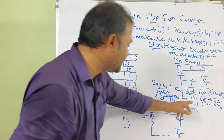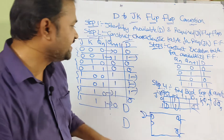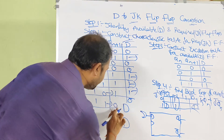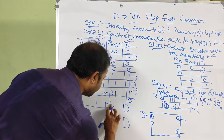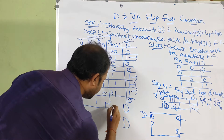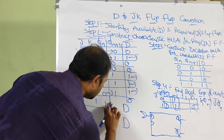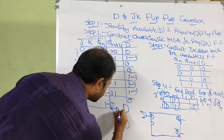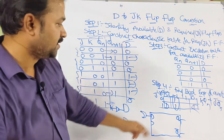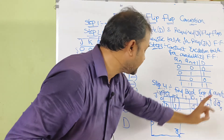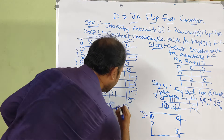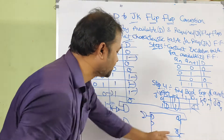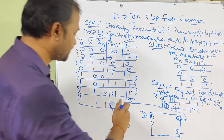The first AND gate implements K̄Qn: the inputs are K̄ (K complement) and Qn. The complemented output from the flip-flop is Q̄n, and the actual output is Qn.